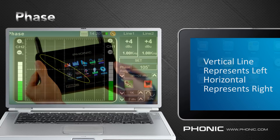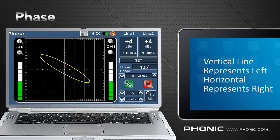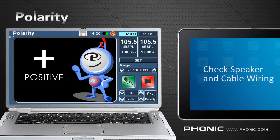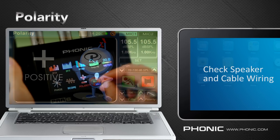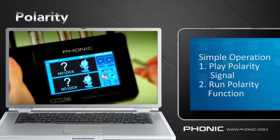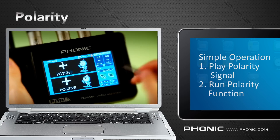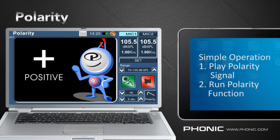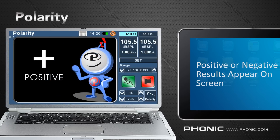The vertical line represents the left channel, while the horizontal line represents the right. Next we have the polarity function. In live setups, often our speakers can sound unusual without us understanding why. Sometimes this is simply because the positive and negative polarities of our speaker are the wrong way around. If you run the polarity signal through the speaker and use the polarity function to take the measurement, you will be able to determine whether the speaker is in or out of phase, indicated by a positive or negative symbol on screen.